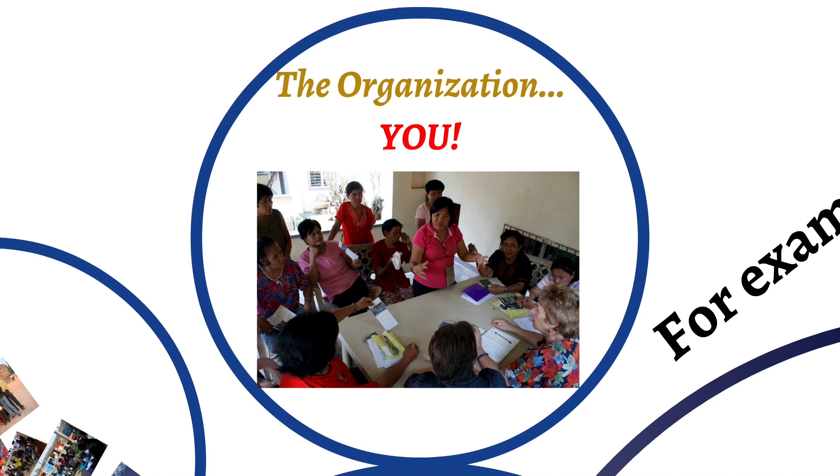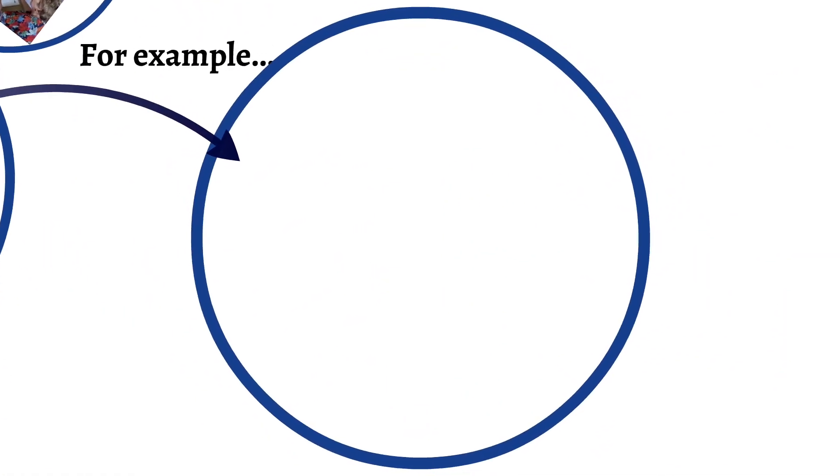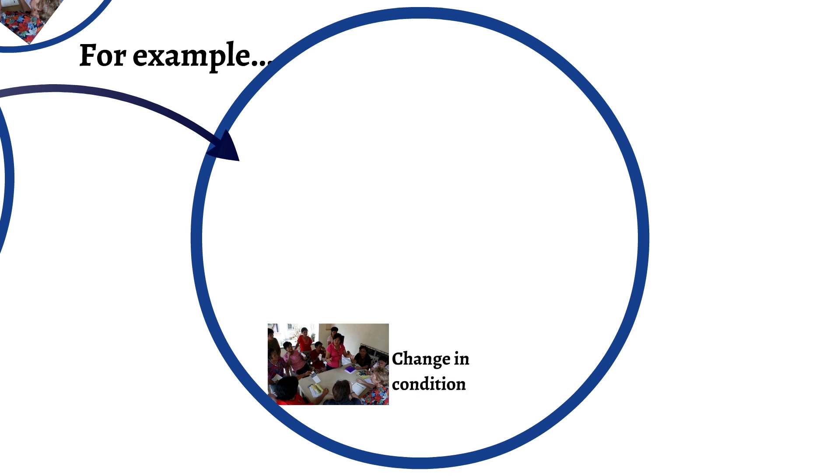So I just want to use a quick example to illustrate what I've been talking about here. So for example, imagine that you are a member-based organization and you want to create a change in condition for your members who are home-based workers. And the change in condition you want to create is giving your members access to equipment they need to improve productivity. And this is the change in condition. You've gone from no access to the tools and now they have access to the tools. This is an outcome. This is the change in condition that you've created for your target group.